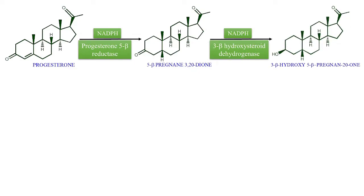Next, in the presence of NADPH and the enzyme 3-beta hydroxysteroid dehydrogenase, there is formation of 3-beta hydroxy-5-beta pregnan-20-one. The change here is that the ketonic group at position 3 is converted to a secondary alcohol, and this secondary alcohol has a beta configuration — the bold line indicates this hydroxyl is in front of the plane.